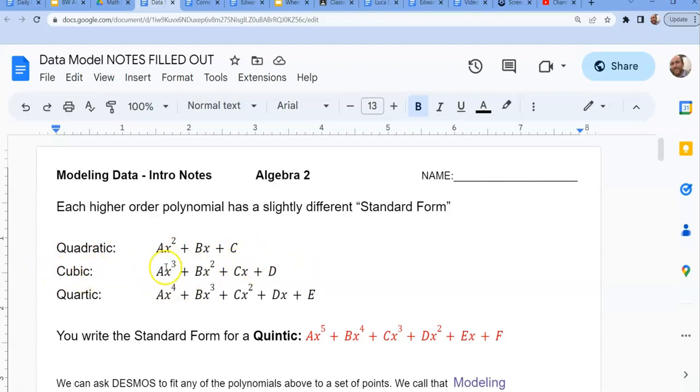A cubic is a degree three. We learned about the word degree. That's the highest one. And then I need placeholders for all the ones underneath it. So an ax³, bx², cx to the first. And this is actually dx to the zero, but we don't write x to the zero because it's one. It's kind of invisible. A quartic would be to the fourth power and then all the placeholders.